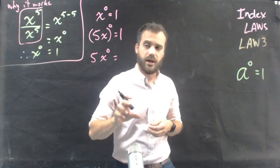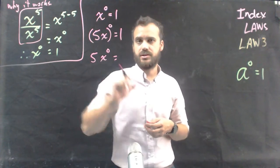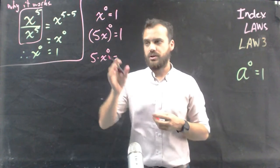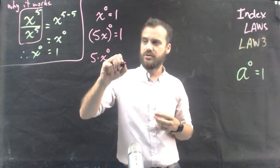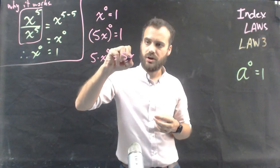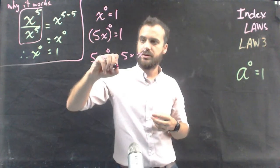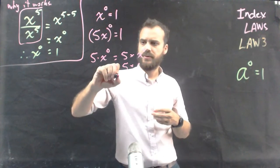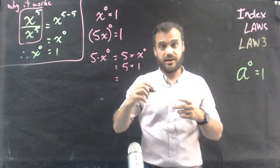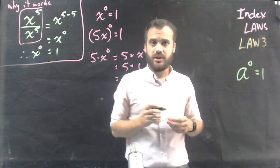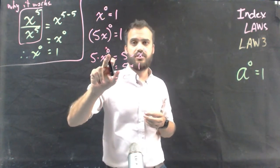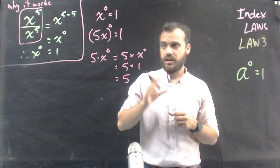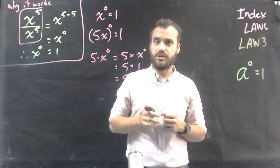Now, this is the one that tricks people up: 5x to the 0. That really says 5 times x to the 0. So 5 times x to the 0 — we know that x to the 0 is equal to 1. Therefore, in this case, the answer is 5. You need to be very, very careful. Just because you see a 0 in the exponent doesn't mean the answer is going to be 1. It really depends on how the question is being asked.